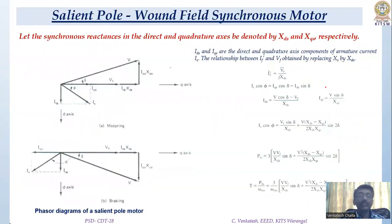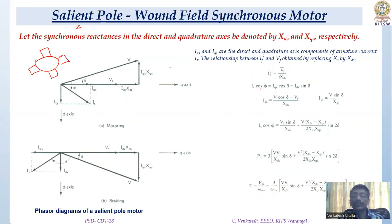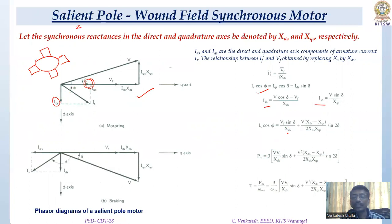Similarly, for the salient pole wound field synchronous motor, the projected poles cause different behavior. From the phasor diagram we obtain I_s × cos(phi), I_ds, and I_qs values. The d-axis current I_ds and q-axis current I_qs are derived, and I × cos(phi) = (V_f × sin(delta)) / X_ds + V × (X_ds − X_qs) / (2 × X_ds × X_qs) × sin(2·delta). From this we obtain the power and torque equations.